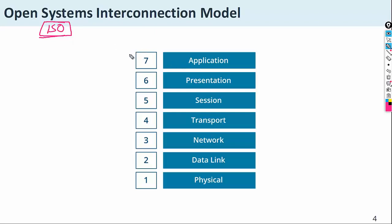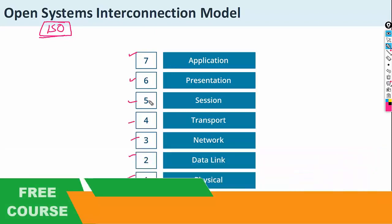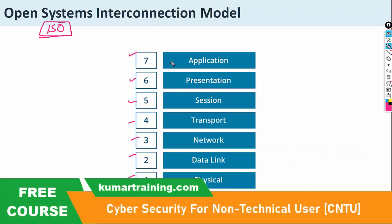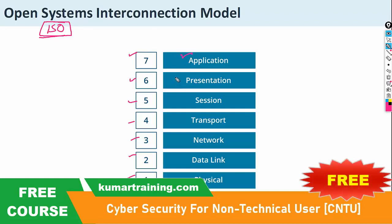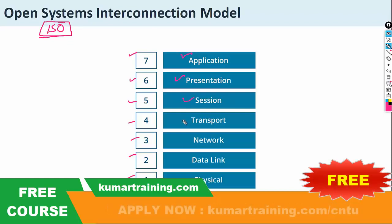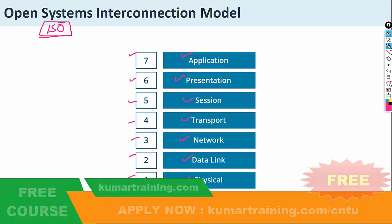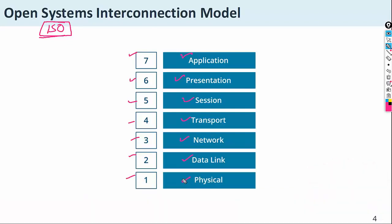There are seven layers in this model. The 7th layer is the Application layer, the 6th layer is the Presentation layer, the 5th layer is the Session layer, the 4th is the Transport layer, the 3rd is the Network layer, the 2nd is the Data Link layer, and the 1st is the Physical layer.